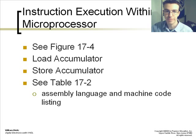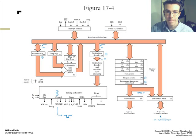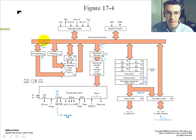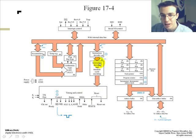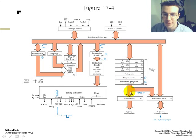Instruction execution within a microprocessor is seen through figure 17-4. You load the accumulator and you store the accumulator. The interrupt control comes in, goes into the accumulator through the ALU, as well as the flags. It goes into the instruction decoder and the timing control unit, the controller. Then it goes into the registers, the stack pointer, the program counter at certain points in time, the address bus, and the data bus to the output.